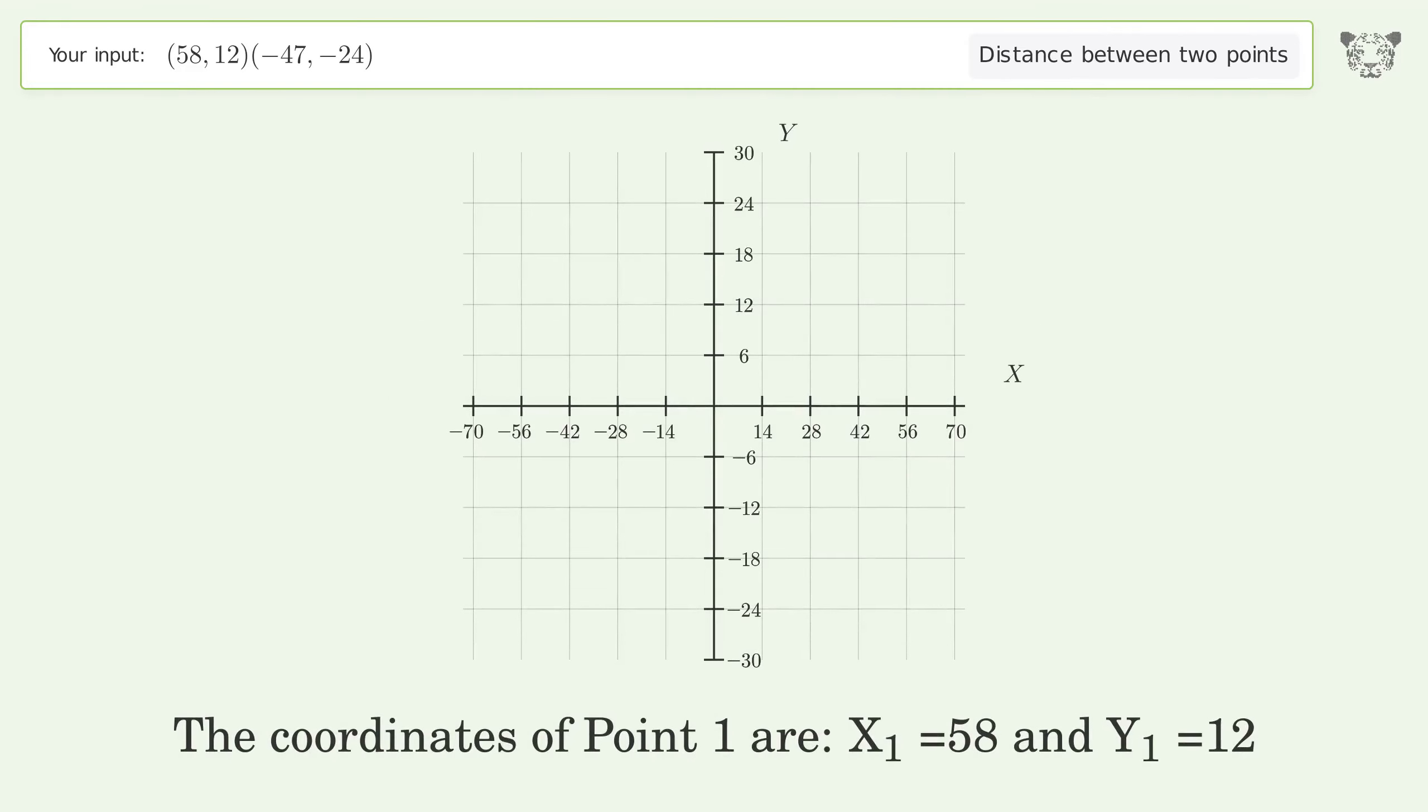The coordinates of point one are x1 equals 58 and y1 equals 12. The coordinates of point two are x2 equals negative 47 and y2 equals negative 24. d is the distance between the two points.